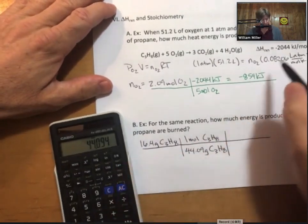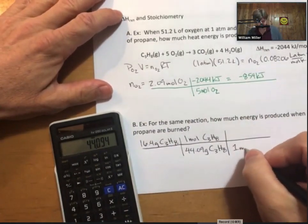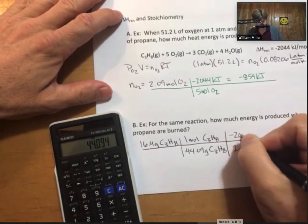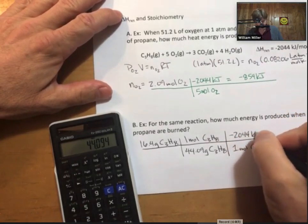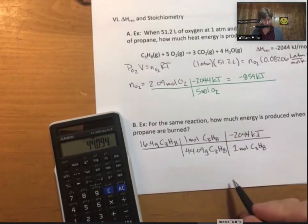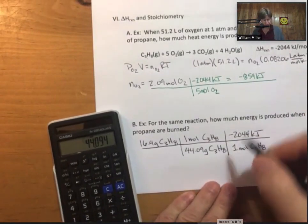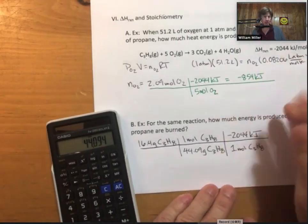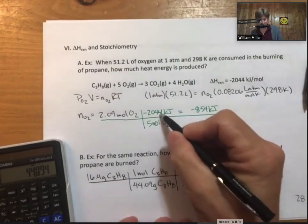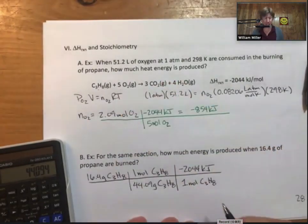And for every one mole of propane, and that is the coefficient, 2,044 kilojoules are produced. That's why it's negative. And so, here is our delta H. Here, above, in the previous example, we had to massage our delta H into that negative 2,044 kilojoules per 5 moles.